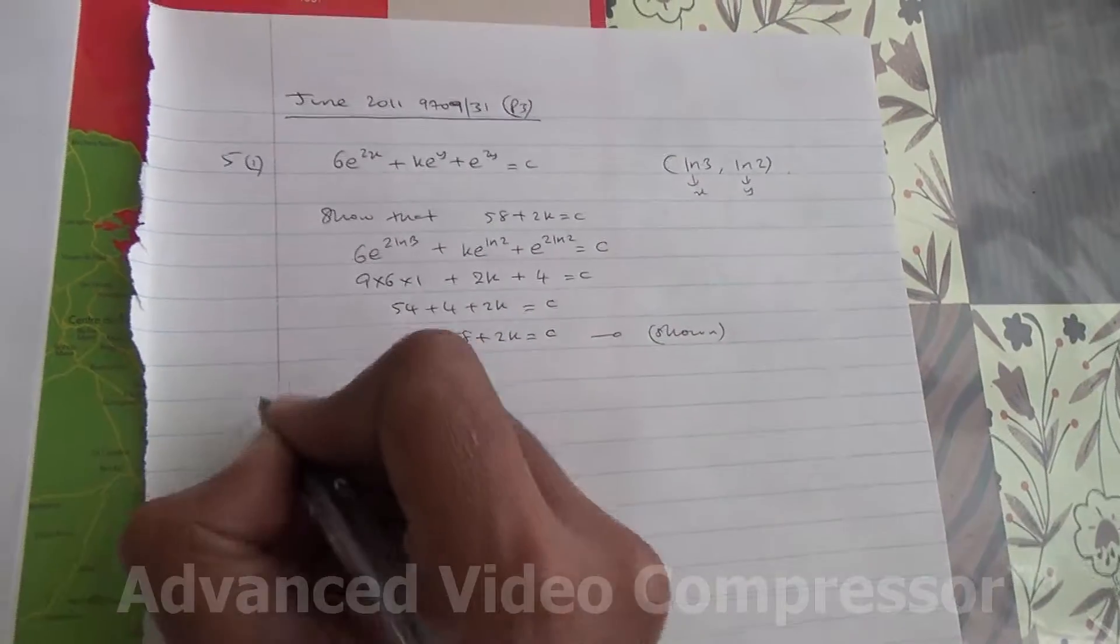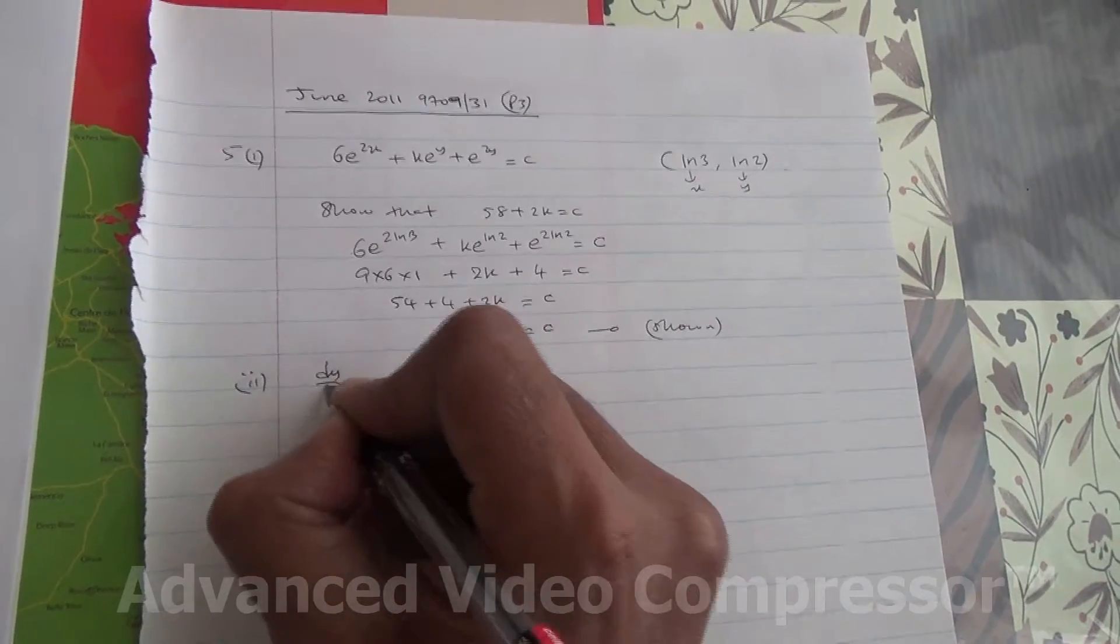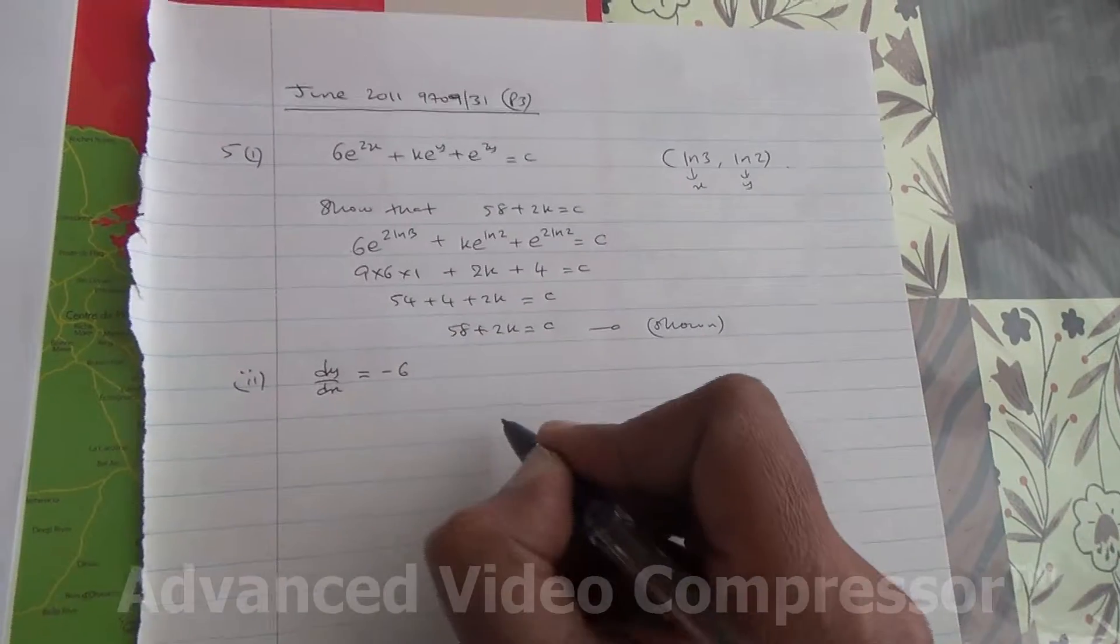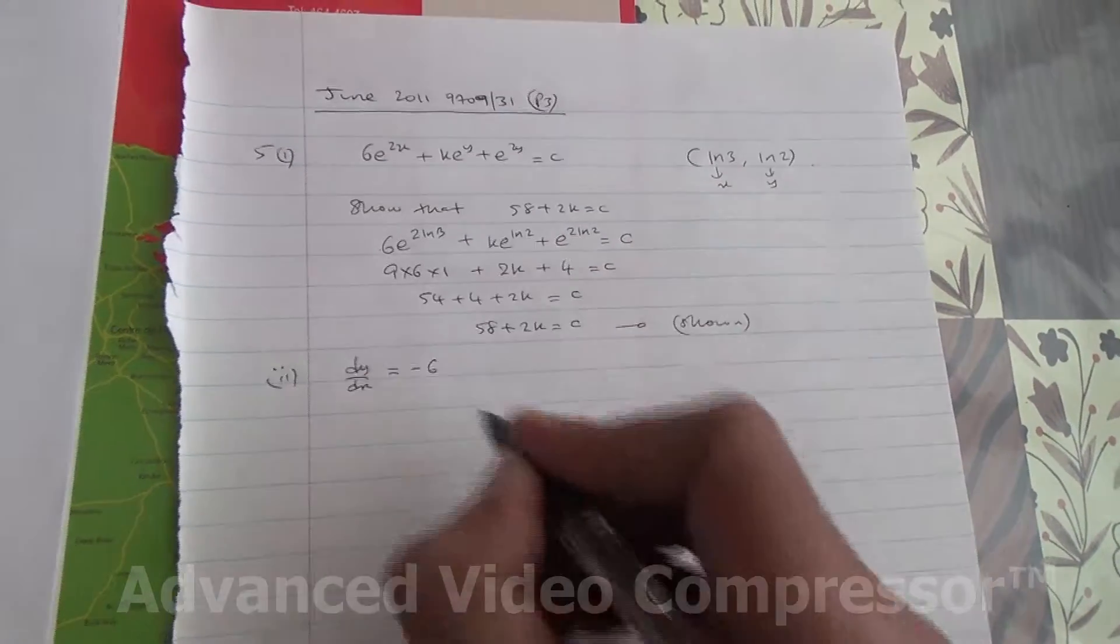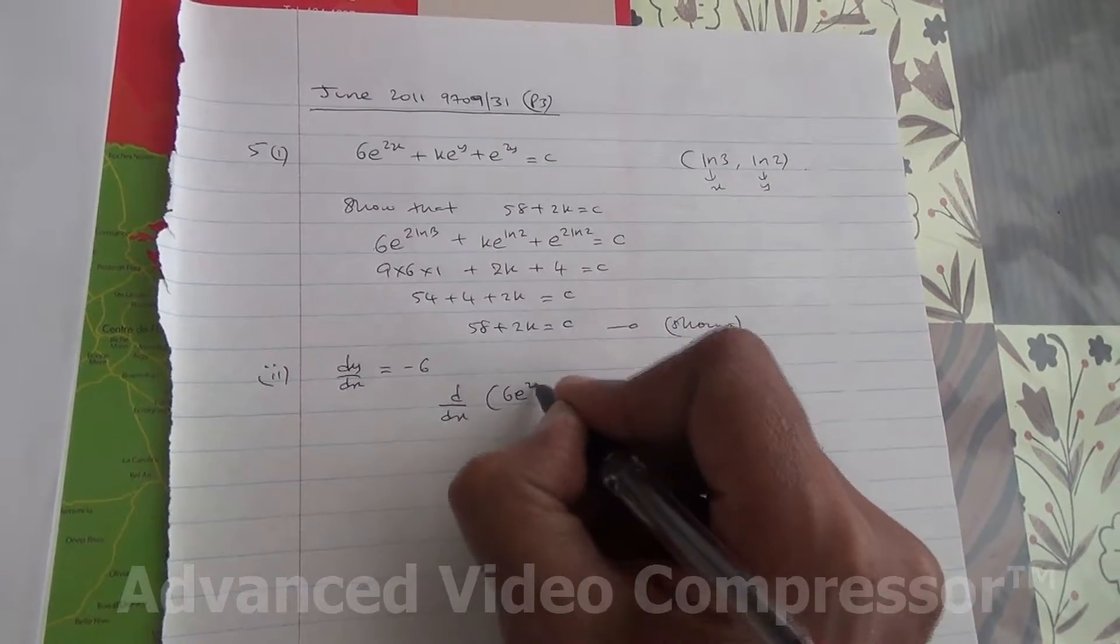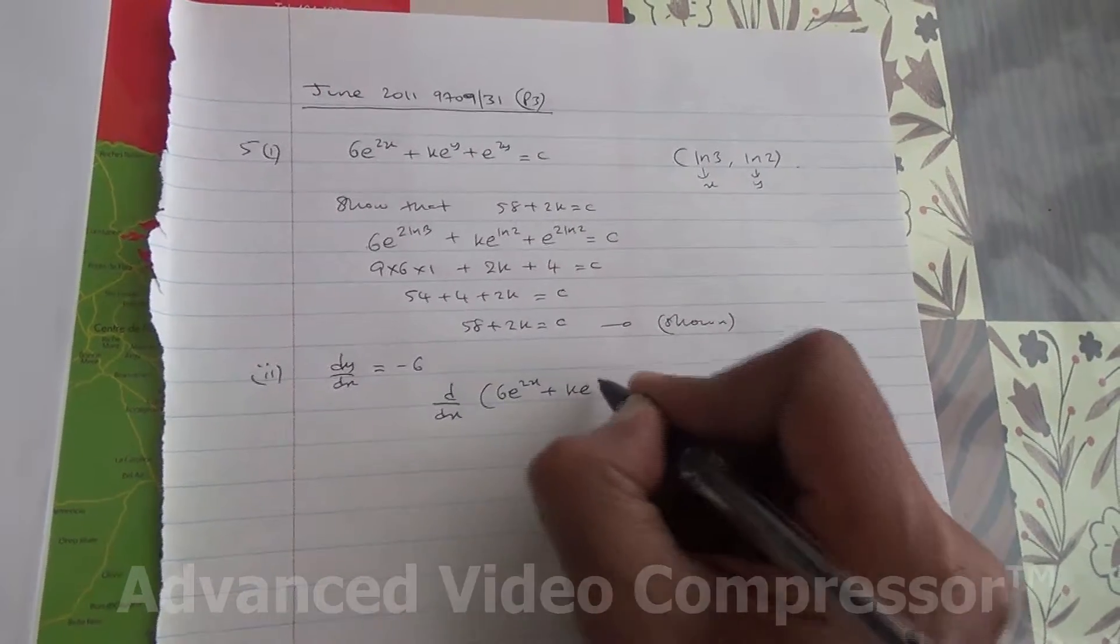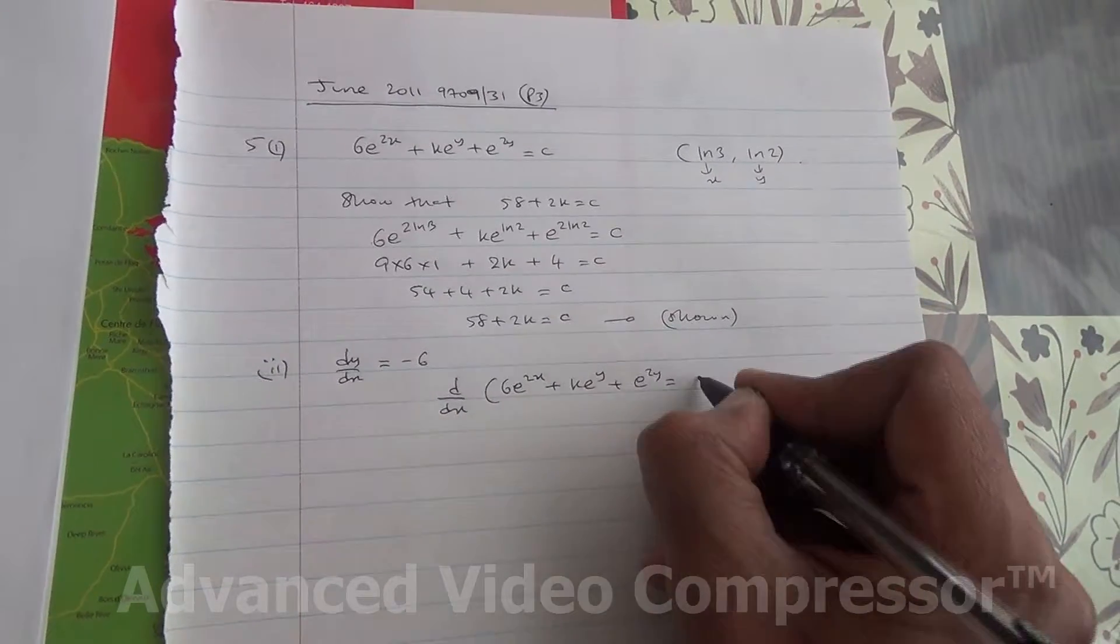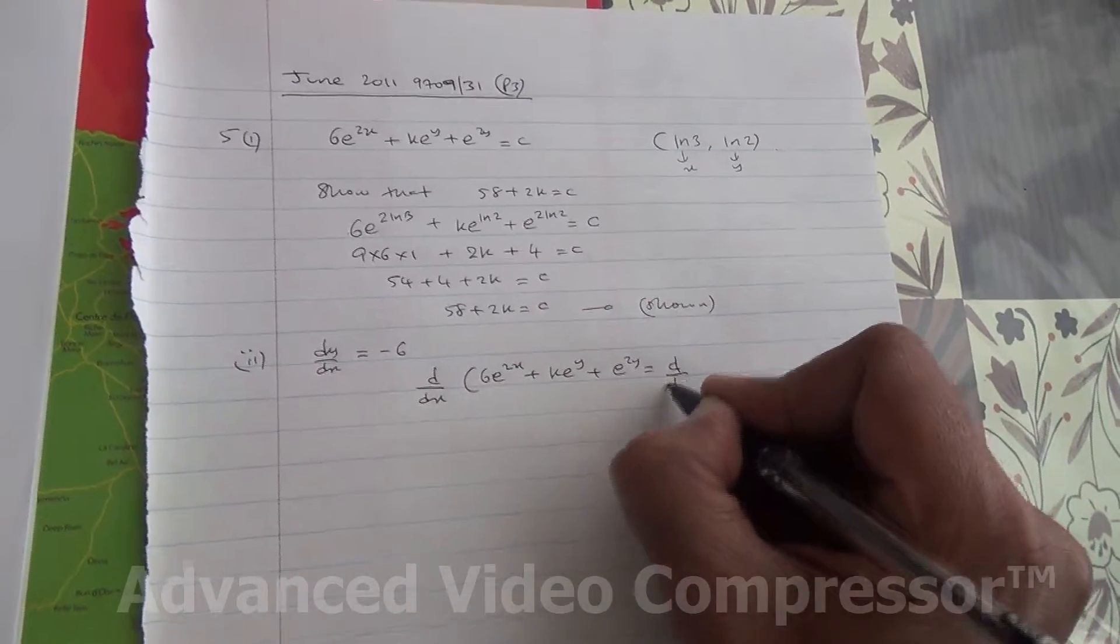For the second part, we are told that the gradient, that is dy by dx, at the point P is minus 6. Therefore, we're going to differentiate the curve. So d dx of 6e to the 2x plus ke to the y plus e to the 2y is equal to c, d dx c.